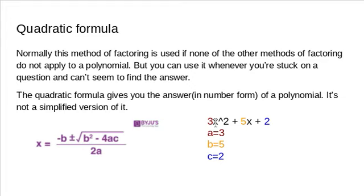When I say a, b, c, you only take the coefficients. You don't take the variables as well. But for c, since there's not really a variable, we don't have to worry about only taking the coefficient. You can just take the number.